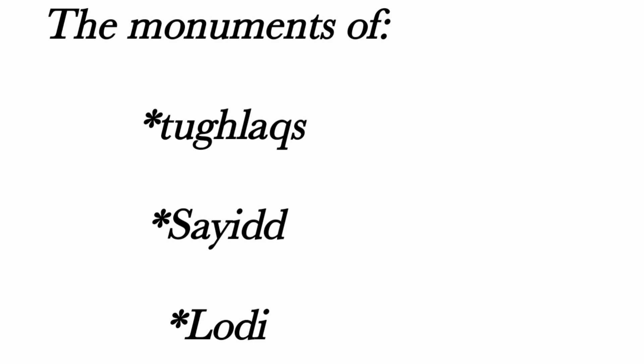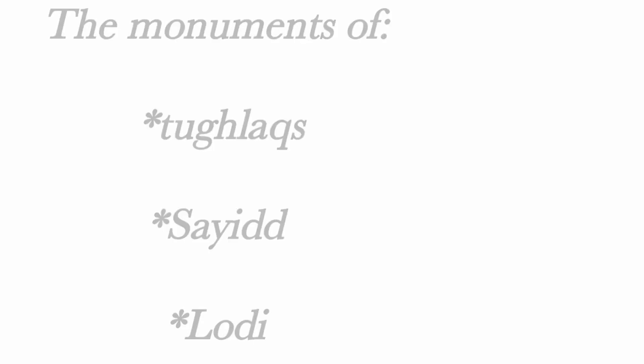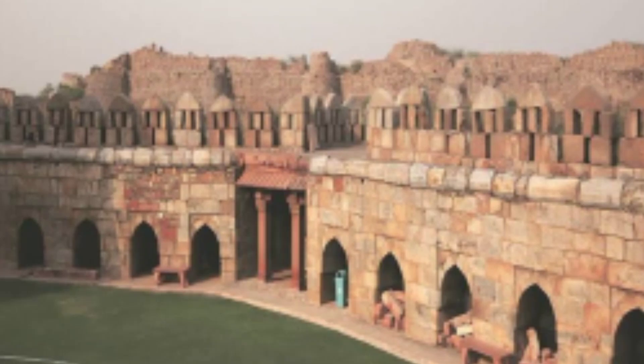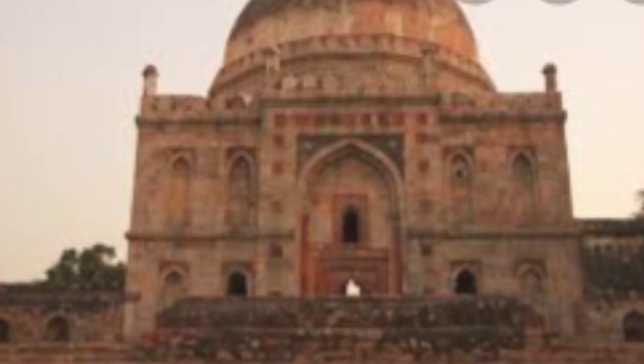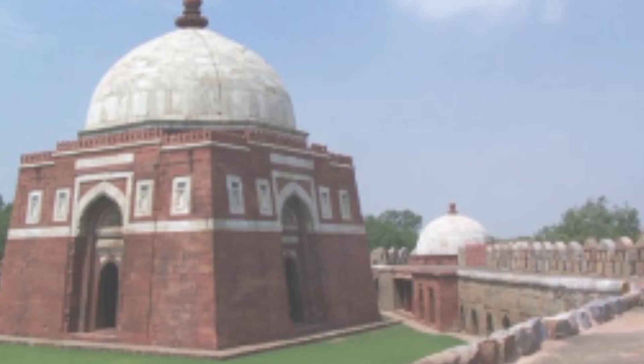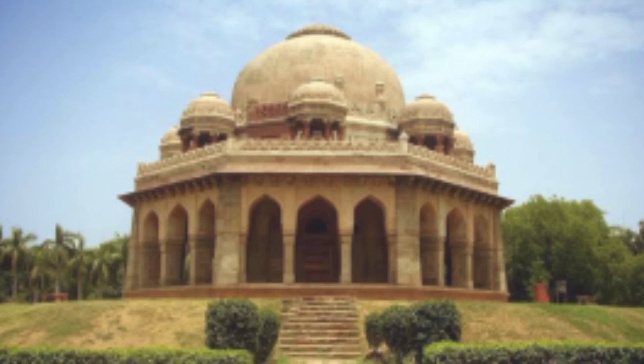Monuments of the Tughlaq, Sayyid and Lodi period include Tughlaqabad Fort, Firoz Shah Kotla, Pir Ghaib and Shish Gumbad, and the tombs of Ghiyasuddin Tughlaq, Firoz Shah Tughlaq and Muhammad Shah Tughlaq.